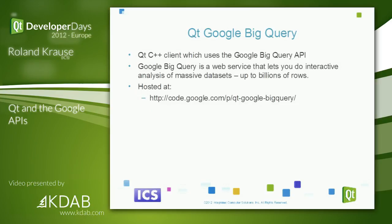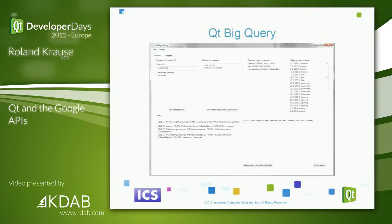BigQuery is Google's Database API where you get to play with big data sets. Google provides very massive data sets so you can work with large amounts of Google data. The example client shows how you can request query data, filter it down, and sort it. You can see the SELECT commands — BigQuery is similar to SQL query but not the exact same syntax.